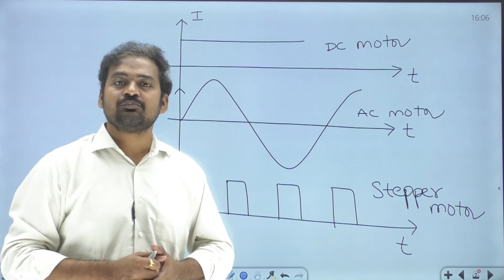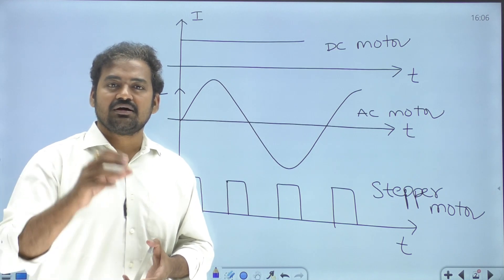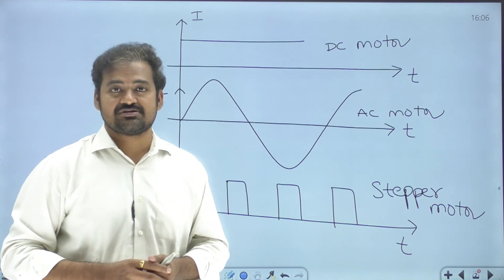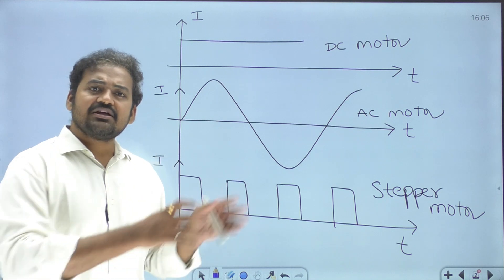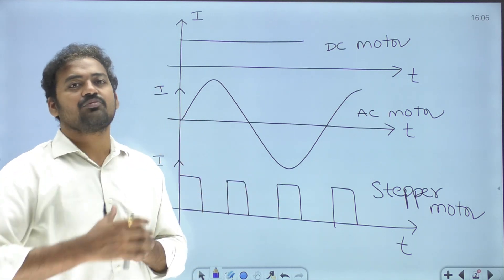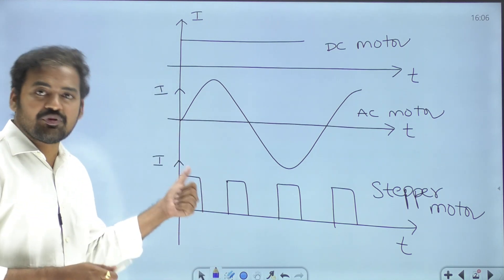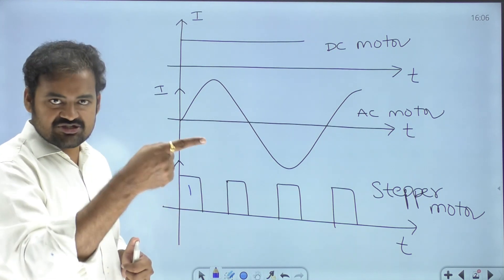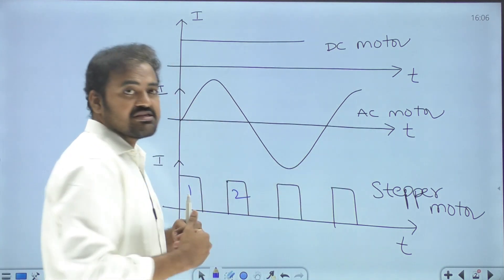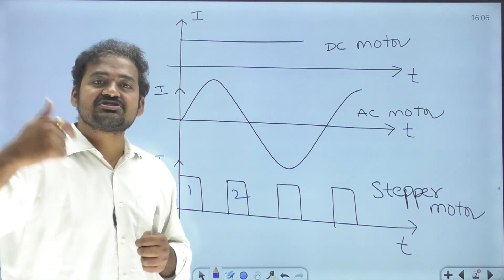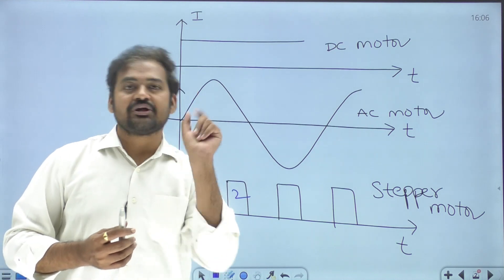How do we create such current input for this motor? These types of pulses can be created using semiconductor controlled switches — that is, by using a simple power electronic circuit, we can generate these current pulses and give them as input for the stepper motor windings. The motor will rotate by one step for every single input pulse. For the first pulse, the rotor rotates by one step; for the second pulse, one more step. If you give 100 pulses in one second, the rotor will rotate by 100 steps. Each input pulse creates one step rotation in the rotor.